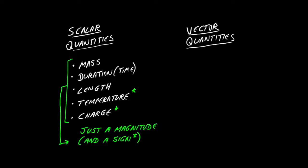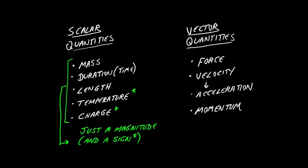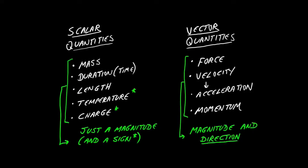How about vector quantities? What's different about them? Think about force, velocity, acceleration, or momentum. These things also have a magnitude. However, they also have a direction — more than just a sign, they have a full-on direction in three-dimensional space. It's not enough to know that a force is three newtons; I want to know in which direction that force is applied. That is the difference between a vector and a scalar quantity.